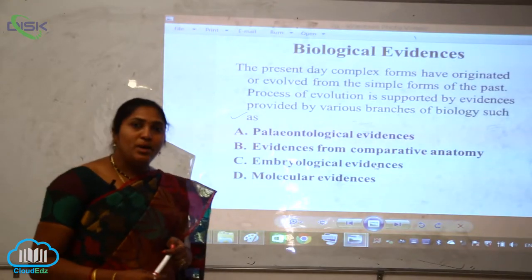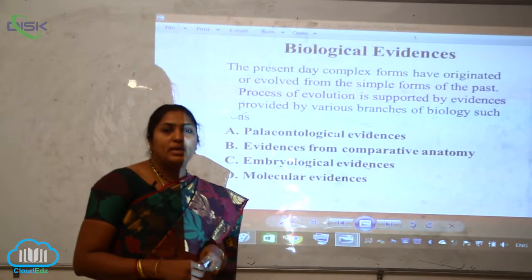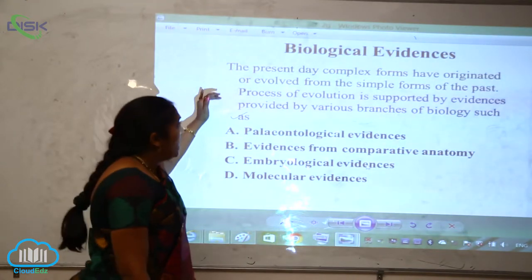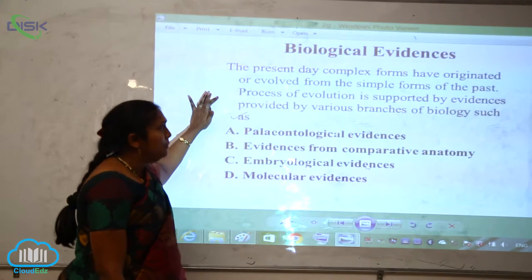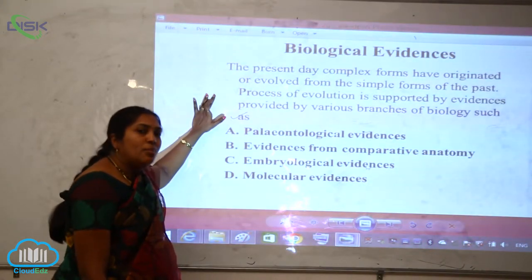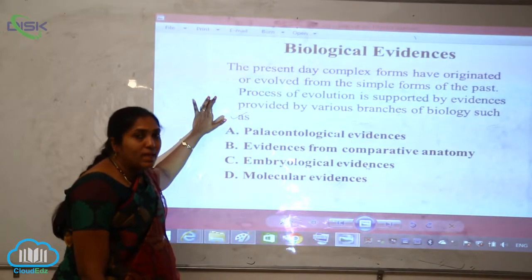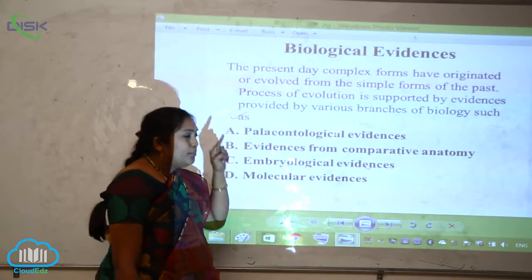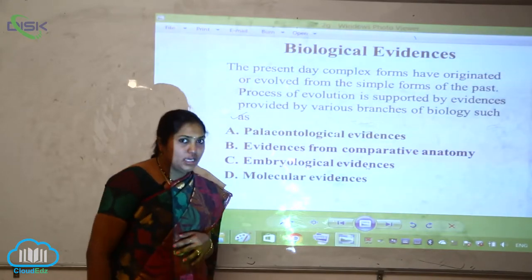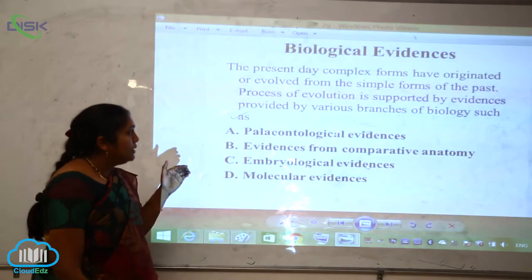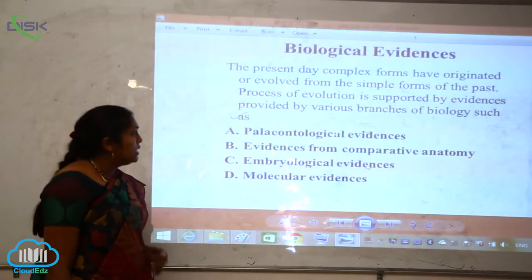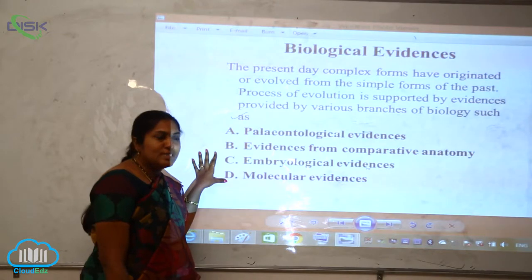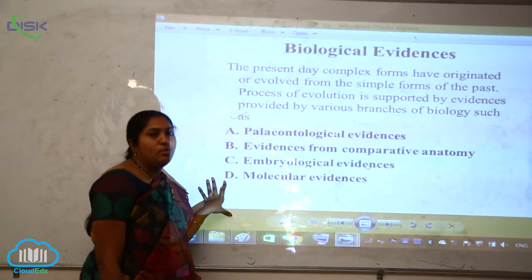Now let us see what is meant by biological evidences and how they are paving their path in organic evolution. Biological evidences show that present-day complex forms have originated or evolved from the simple forms of the past. So whatever we are today is only from the traits we have taken from our ancestors. The process of evolution is supported by evidences provided by various branches of biology, such as paleontological evidences, comparative anatomy, physiological studies, embryological evidences, and molecular evidences.